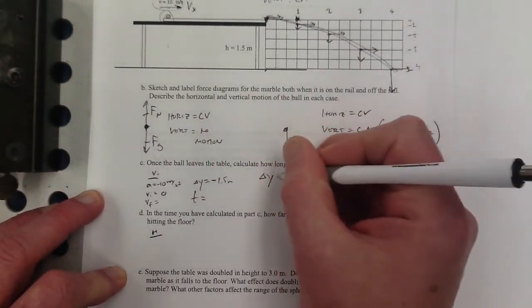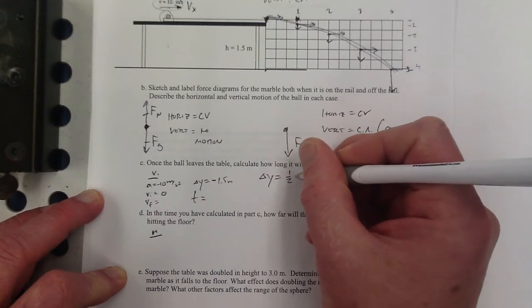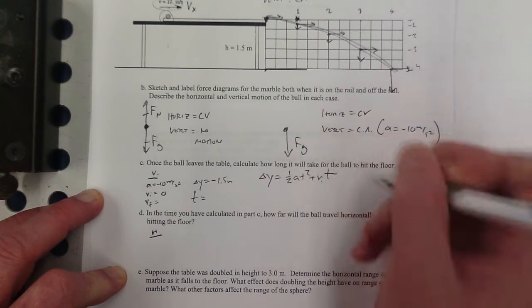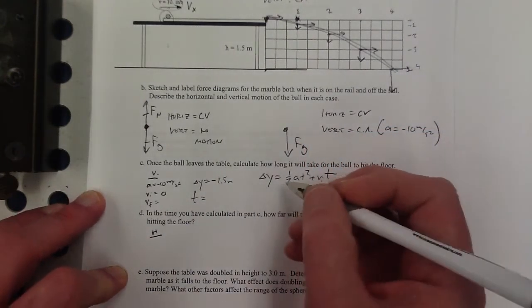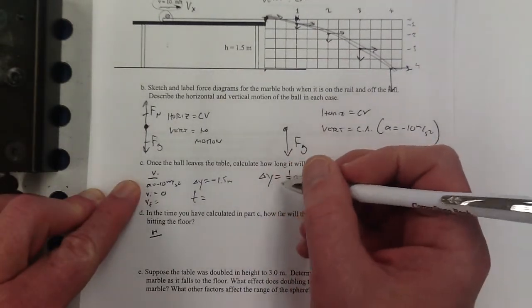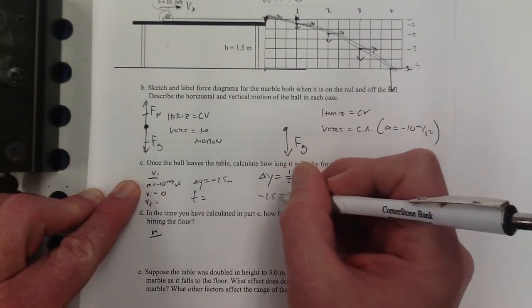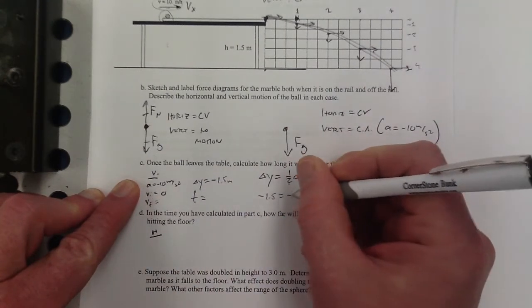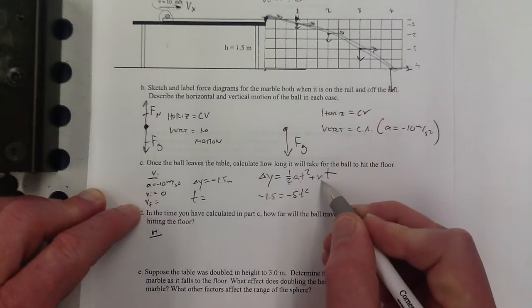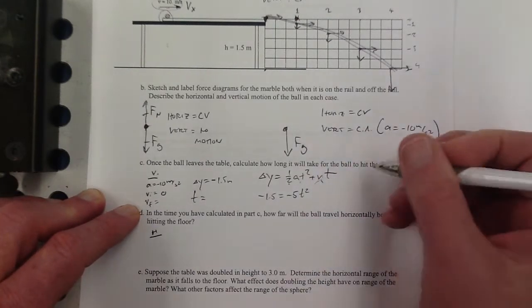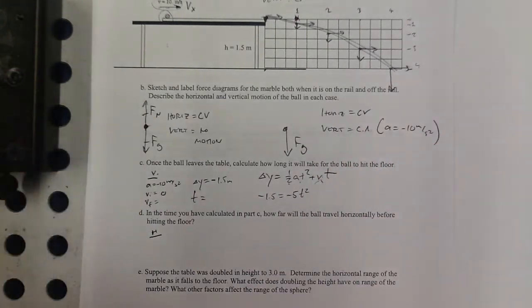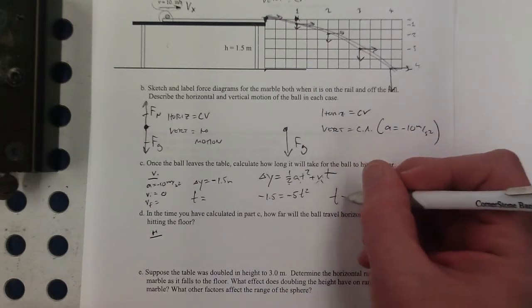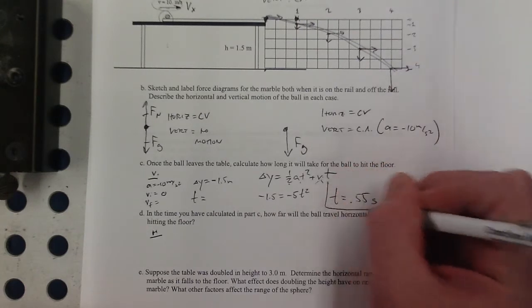So which equation is that? I'm going to look at my kinematics equations and write down that equation. Then I'm going to plug the numbers in. So negative 1.5, one-half times negative 10, negative 5t squared, and the vi is zero, so that cancels out. So my calculator, I'm going to find the square root of 1.5, and that's about 0.55 seconds.